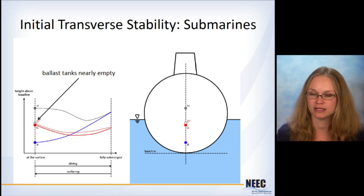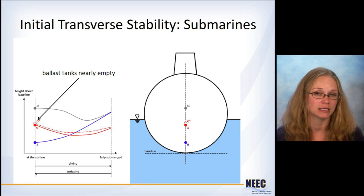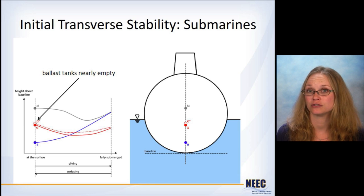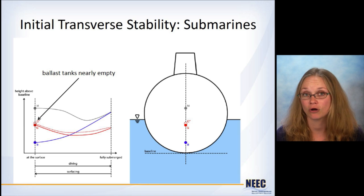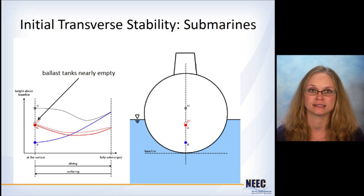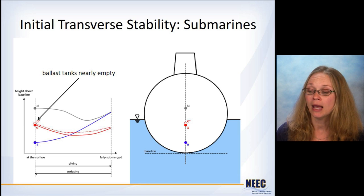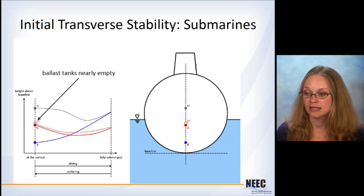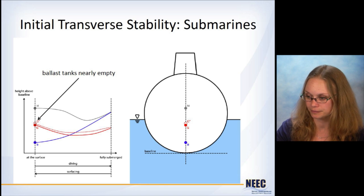If you remember from the effects of loading on stability lecture, we talked about the free surface effect. The free surface effect is when you have liquid that's sloshing on in a tank, that will cause a virtual rise in the center of gravity. And we call that G double prime. So that's marked down here. Because the ballast tanks are nearly empty, that virtual change in the center of gravity is not very much. So it's just a little bit above G.